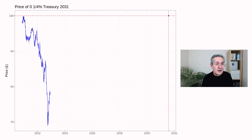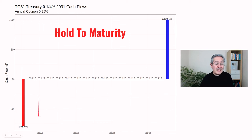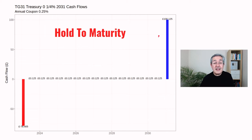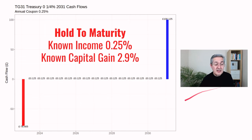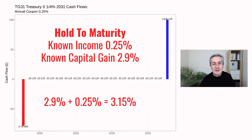These are the cash flows if you buy that bond today. There's a large negative cash flow because you pay £78.41 for the bond. Then every six months you receive £0.125 — that's your coupon income of 0.25% split into two payments per year. Then on the maturity date in 2031, you receive your last coupon and your principal of £100. Your known income is 0.25% per year, and your known capital gain is 2.9%, because you bought at £78 and it matures at £100. Adding those two together gives an average income of about 3.15%, and that's called the yield to maturity.